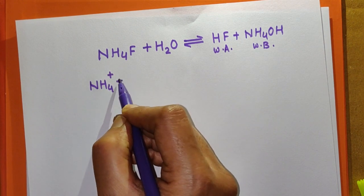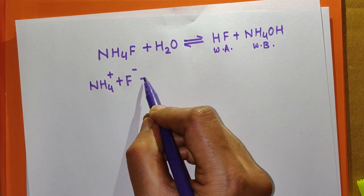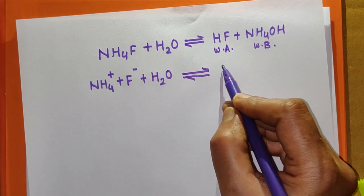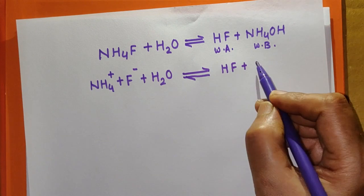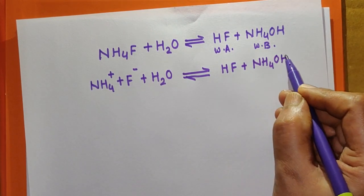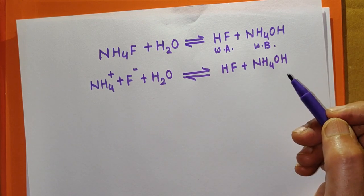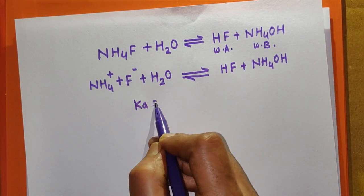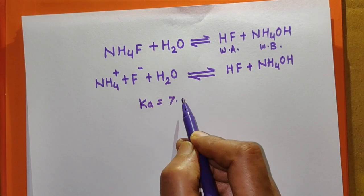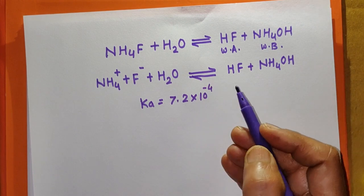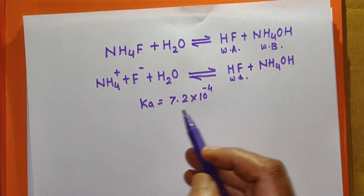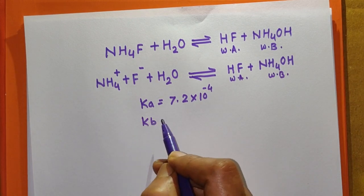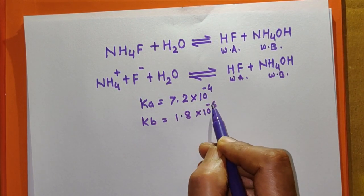NH₄F is a salt, so it completely ionizes to give NH₄⁺ ions and F⁻ ions. These react with water: HF remains in molecular state as it is a weak acid, and NH₄OH remains in molecular state as it is a weak base. The Ka value for HF is 7.2 × 10⁻⁴, and the Kb value for NH₄OH is 1.8 × 10⁻⁵.